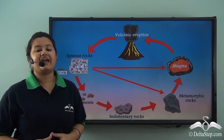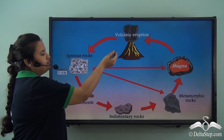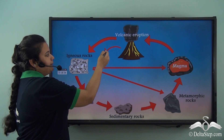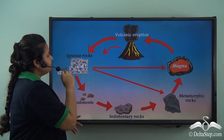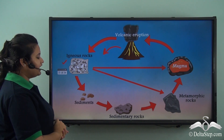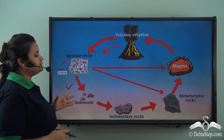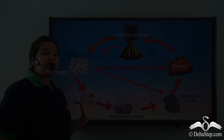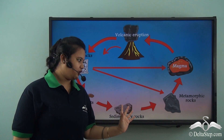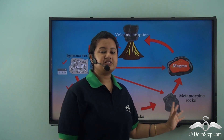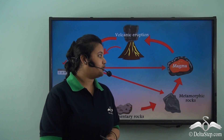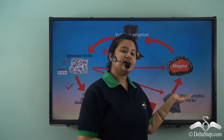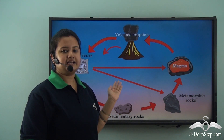Here we have the complete picture of the rock cycle. Igneous rocks are formed when molten materials erupted from a volcano solidify. The igneous rocks are further denuded and weathered to form sediments. The sediments are pressed and become compact to form sedimentary rocks. The sedimentary rocks come under the influence of excessive heat and pressure and form metamorphic rocks. Metamorphic rocks again melt to form magma and the cycle continues.